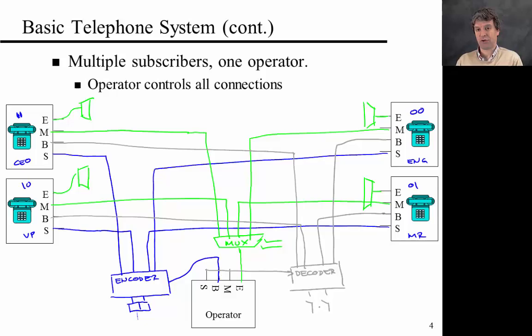So now the operator can switch this to 00. And what's going to happen is that this code that you input will be decoded. And the decoding here means that one of the wires on the output corresponding to that code, so in this case 00, will be true, and hence the bell will ring at the engineers. And then at this point, the engineer can pick up the phone and she can talk to the operator using this multiplexer connection and eventually can also be connected to the CEO using a different setting on the multiplexer.